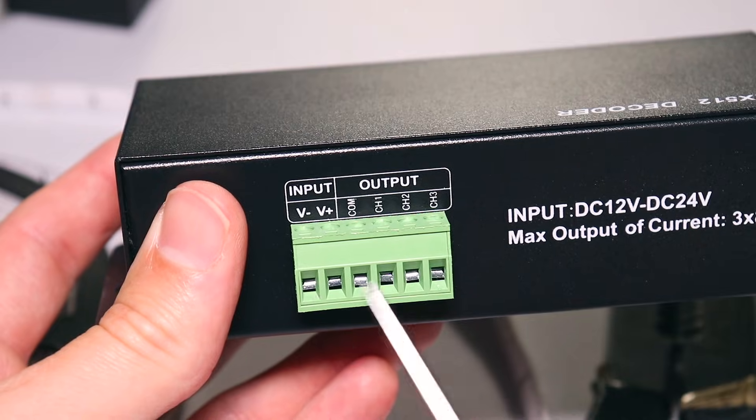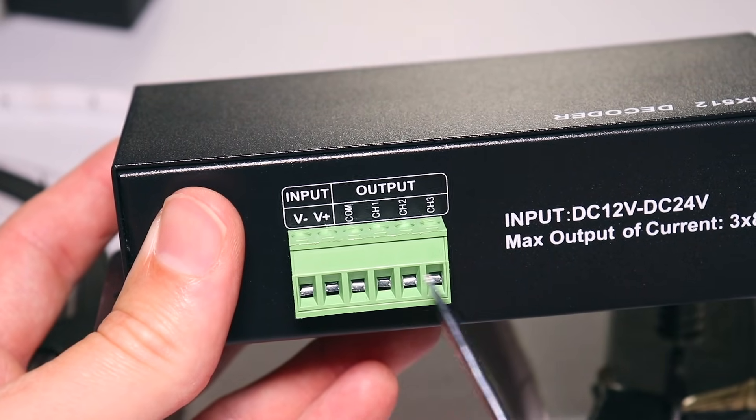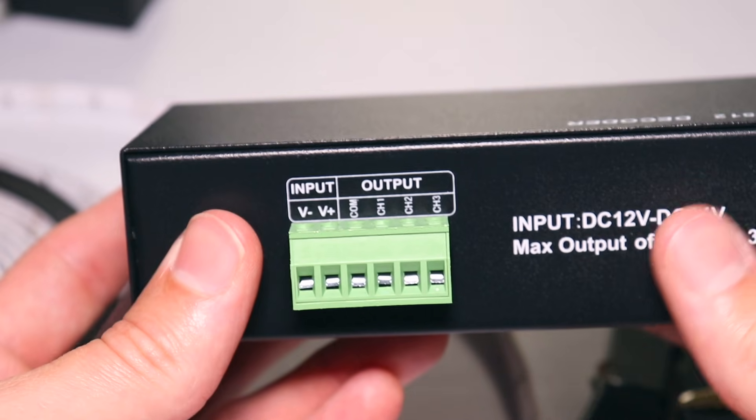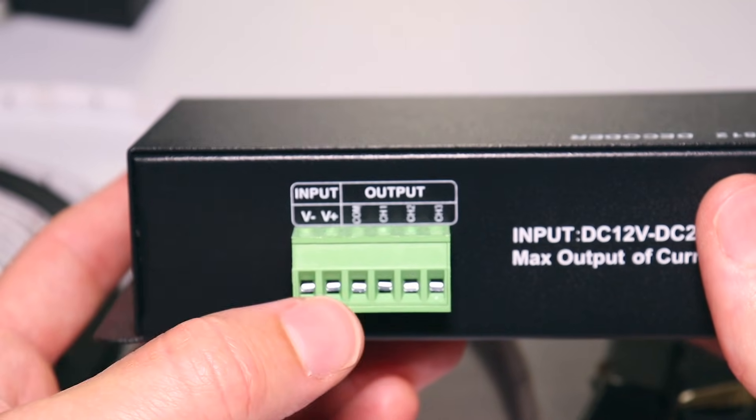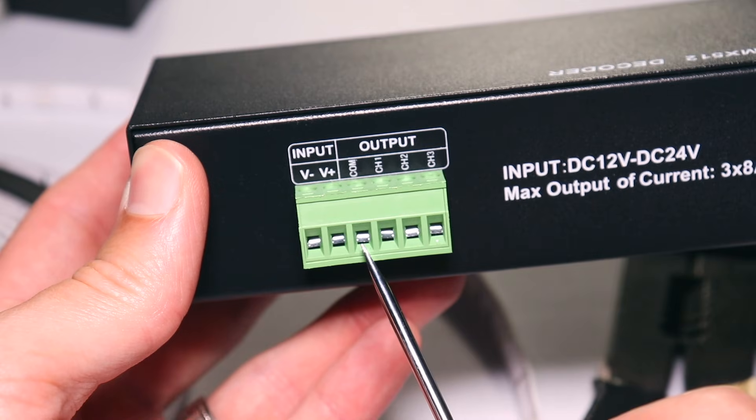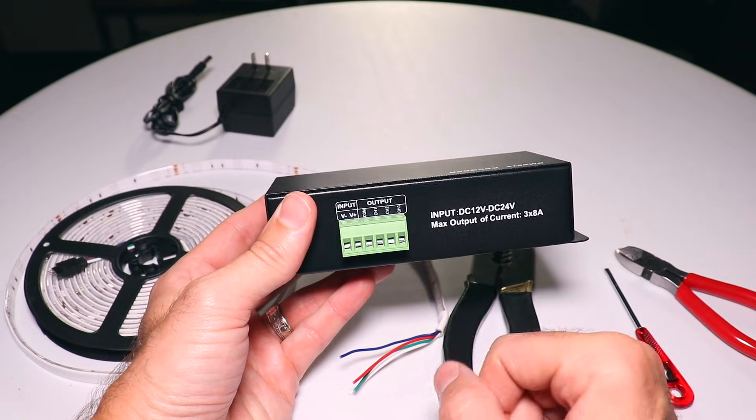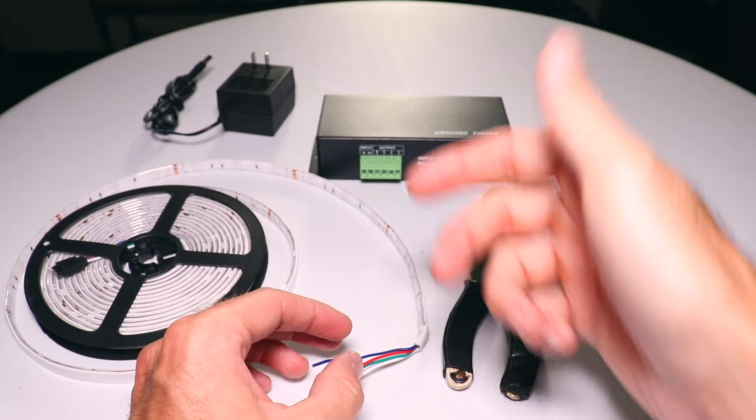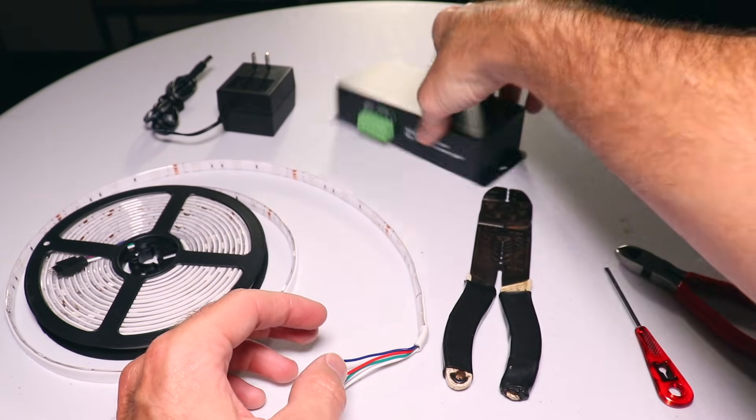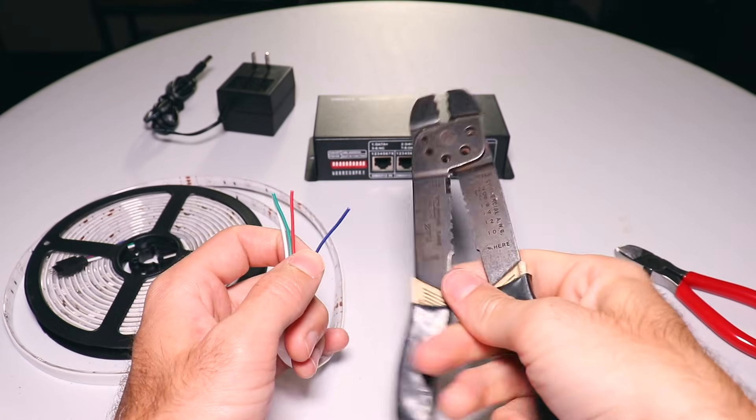Now on your decoder you will see a V minus, V plus, comm channel one to three. The V minus and V plus is for your power brick. You're going to connect your black and red cable there. Your white wire will go right here, red, green, and blue. Now sometimes these can be wired a little weird and we'll take a look at that once we've got everything wired up and just make sure it is actually working properly. All right so just go ahead and get to work. Start stripping your wires and get it ready to connect.